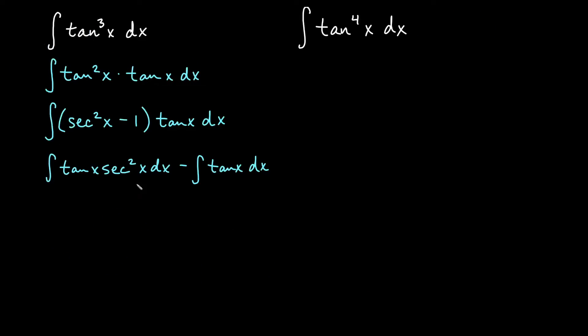So if we go ahead and do this, now this is a situation where I have tangent x and secant squared x by themselves. So I can think of u equals tan x here, and du is secant squared x dx. This one works out great. This first one is going to become the integral of u du. The second integral is actually the very first integral that we did.